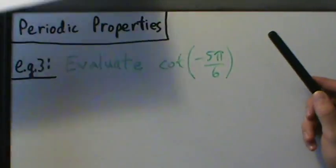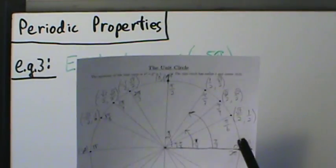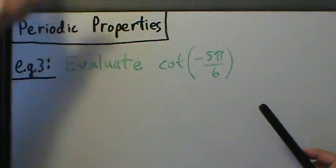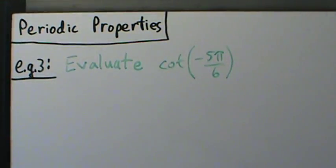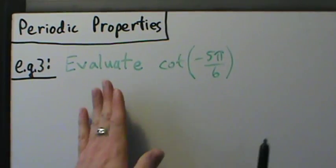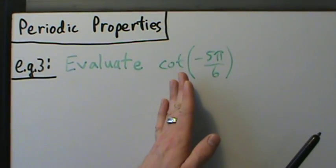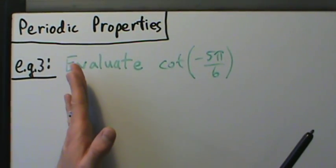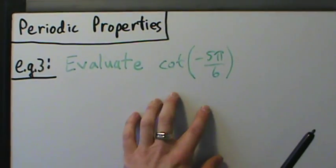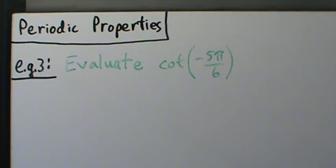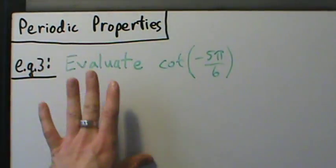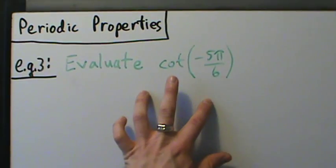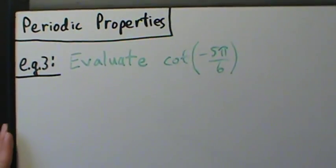We keep adding or subtracting π until we get an angle between 0 and π, which will hopefully be a special angle on the unit circle. We could use 2π just like with all the other ones, but if we're using periodic properties, we should be careful and just use π.